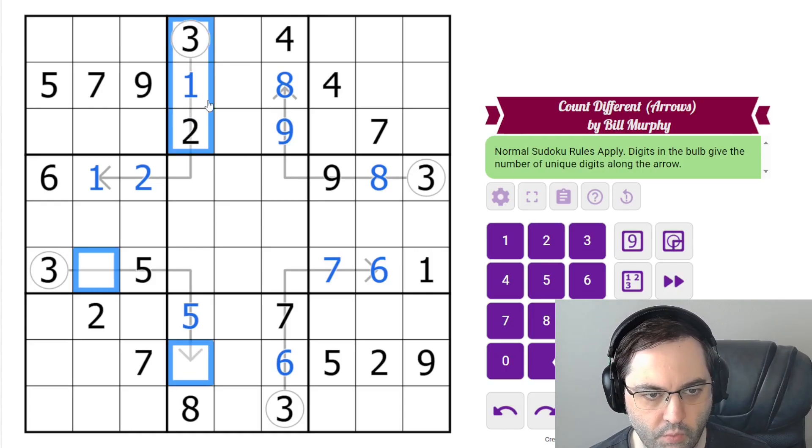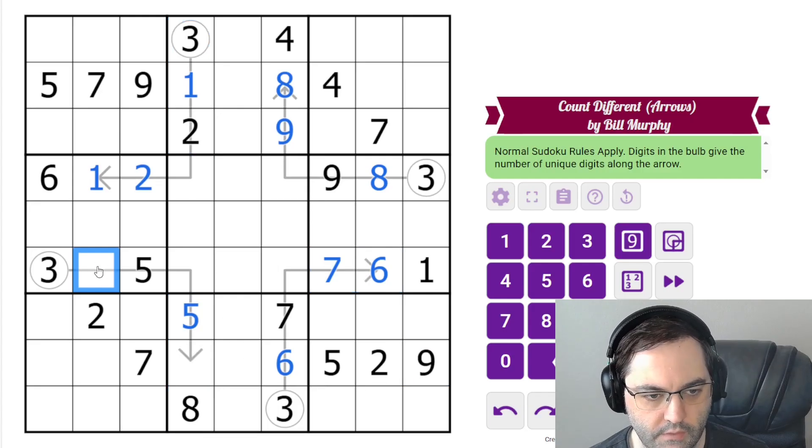And then these can't be one, two, three. Could be four. Can't be five, six, seven, eight, or nine. So these are four.